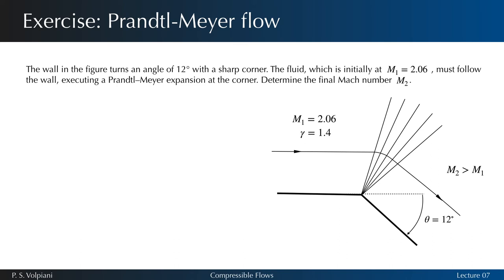This solution is very simple. We know from the table that nu m1 equals 28 degrees. So nu m2 equals 40 degrees. From the table, we obtain that m2 equals 2.54.